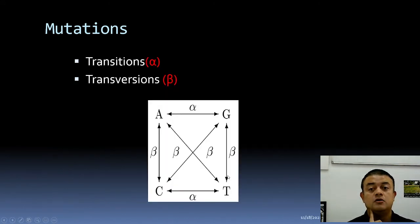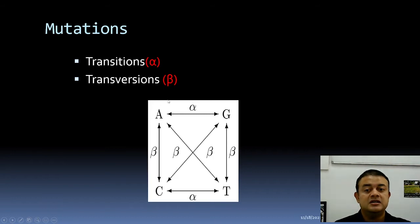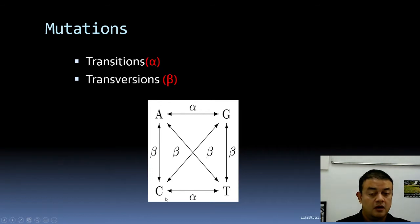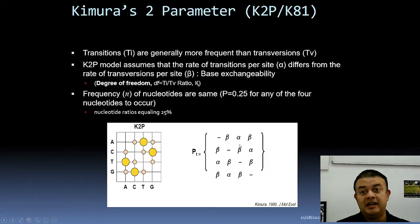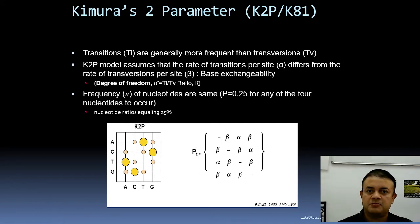That factor needs to be incorporated. Transitions are called alpha and transversions are called beta — A to G or vice versa, or C to T and vice versa is alpha, and all the rest are beta transversions. Each can have its own probability, which is what the Kimura 2-parameter K2P model addresses.